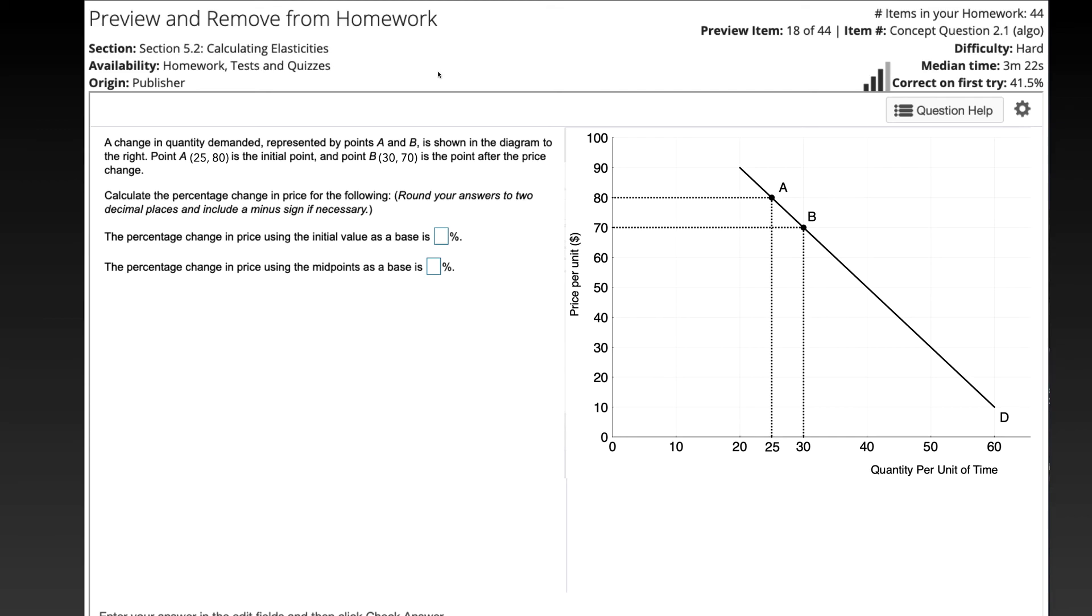So you see here, we have a change in quantity demanded, represented by points A and B, as shown in the diagram to the right. Point A, which is a quantity of 25 and a price of 80, is the initial point, and point B, where the quantity is 30 and the price is 70, is the point after the price change. So point A is the initial point, point B is the point after the change in the price.